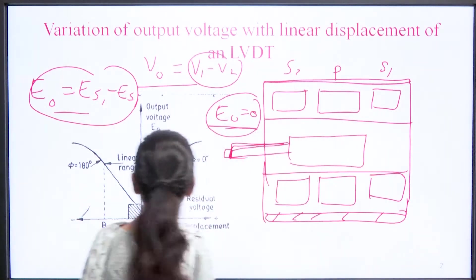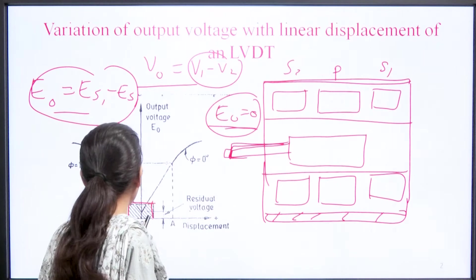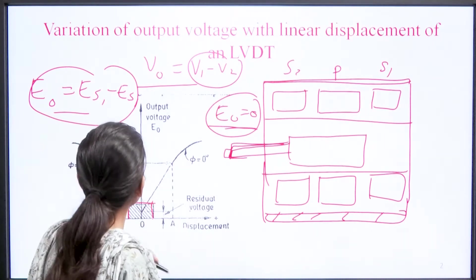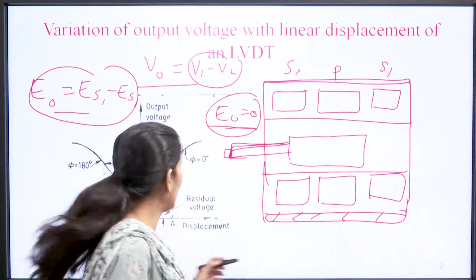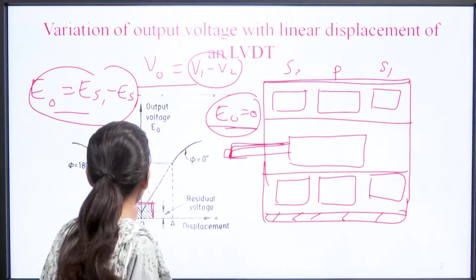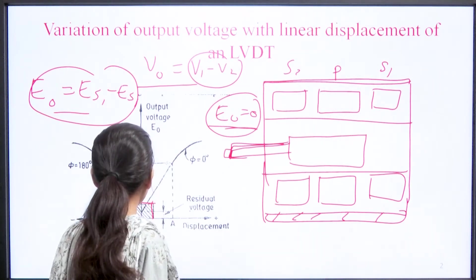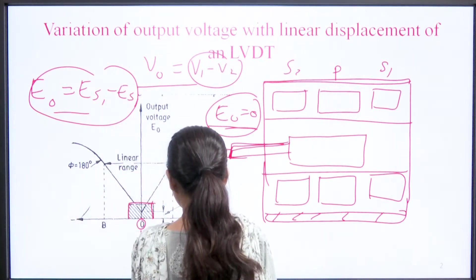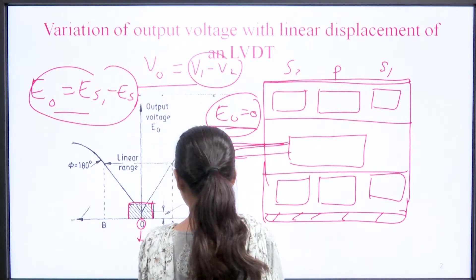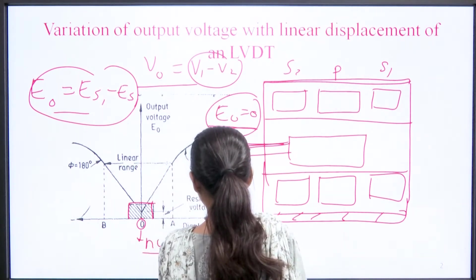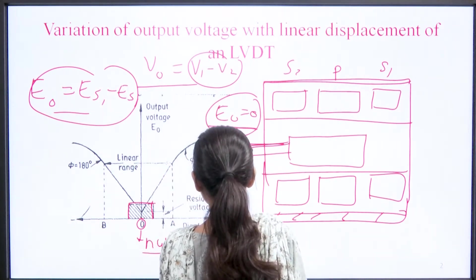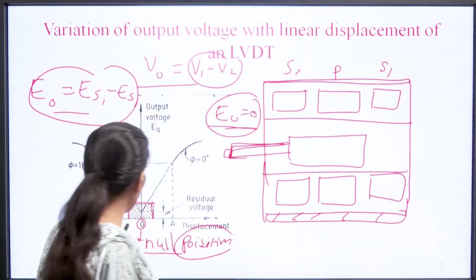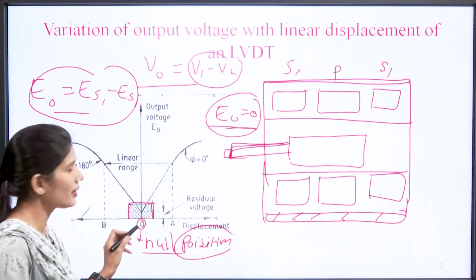We have drawn the input-output characteristics. At null position — indicated as zero on the graph — the output voltage we get is zero. So this point on the graph represents zero output at null position.